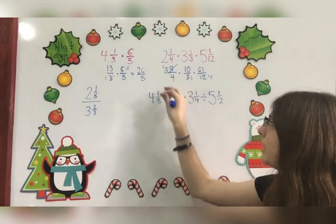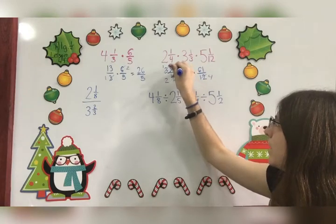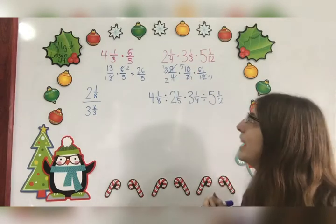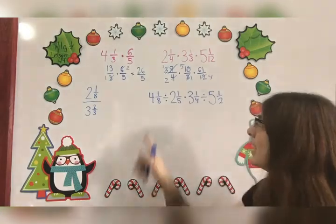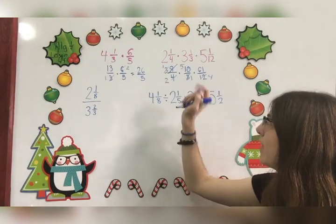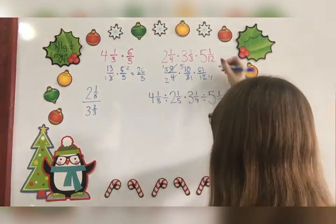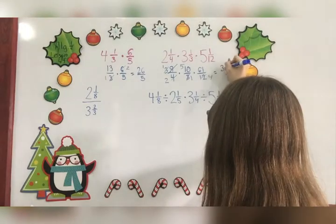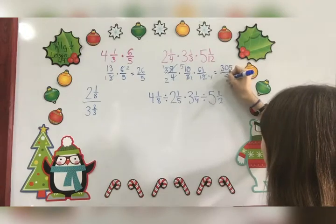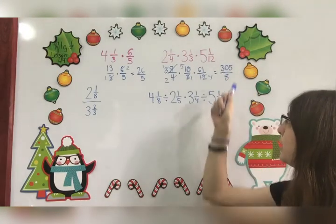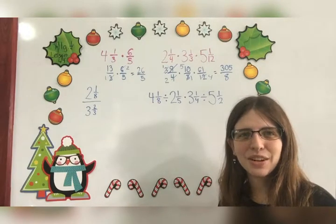How about 4 and 10? 4 divided by 2 is 2, 10 divided by 2 is 5. Anything else we can cancel? Nope, nothing else. So now we just multiply across. 1 times 5 is 5, and 5 times 61 is 305. 2 times 1 is 2 times 4 is 8. Check to see if you can reduce. Nope, that's it. So 305/8 is your final answer.